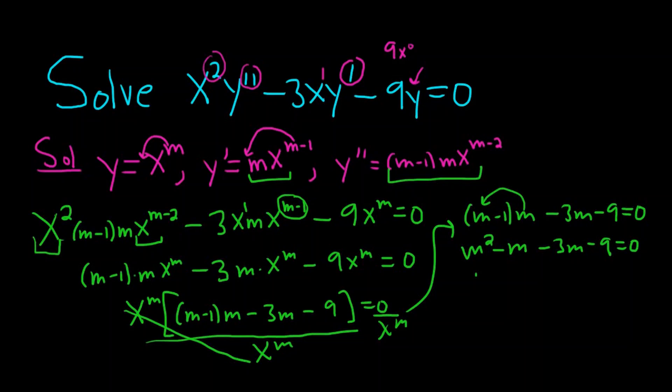We can combine like terms now. So m squared minus 4m minus 9. And that's equal to 0.